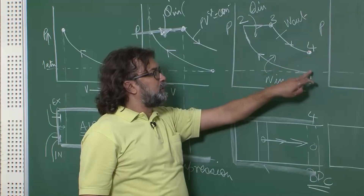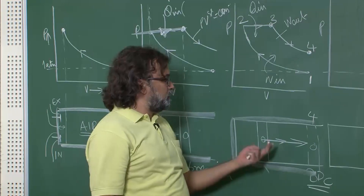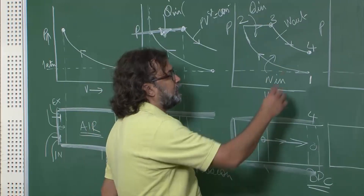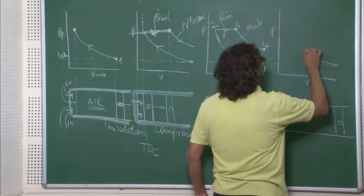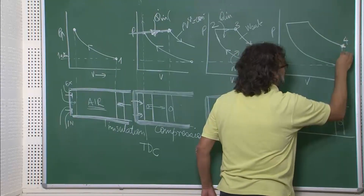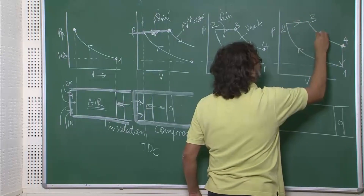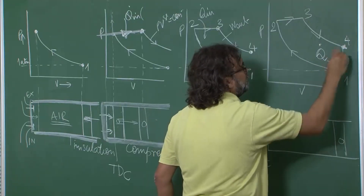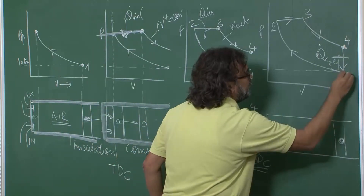We assume there is a mechanism by which we can instantaneously take out whatever heat remains at position four — to get rid of it so that temperature and pressure come back to the original values. From position four we go back to position one — this is the heat rejection step, where Q is rejected. We have again reached position one.